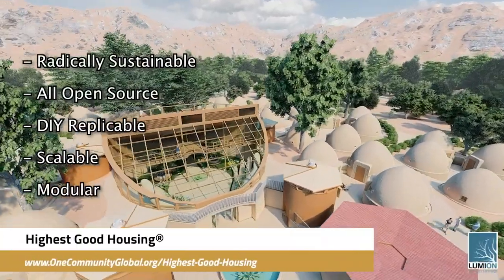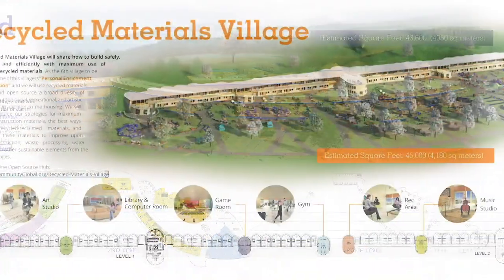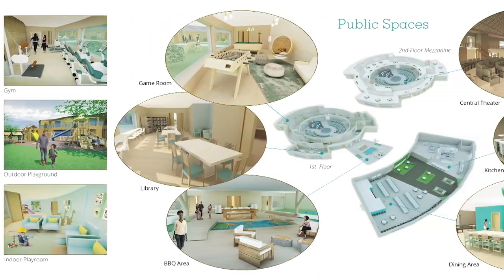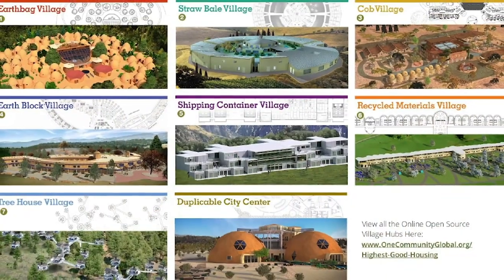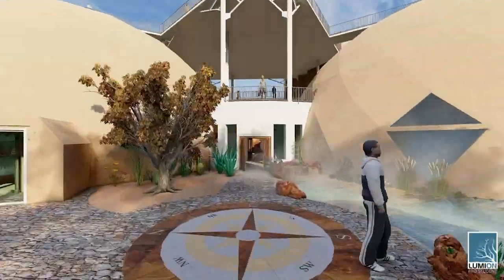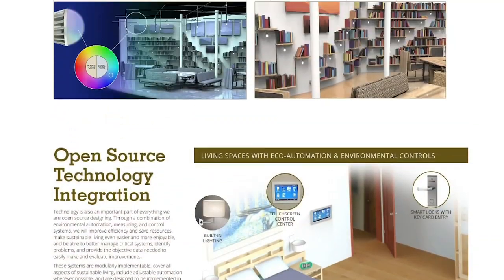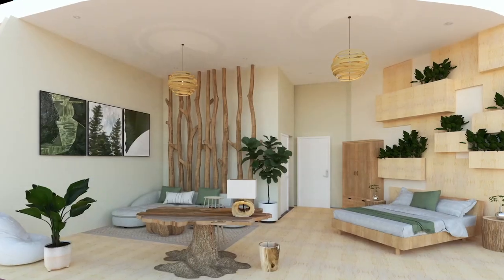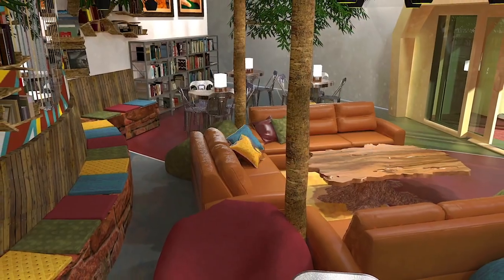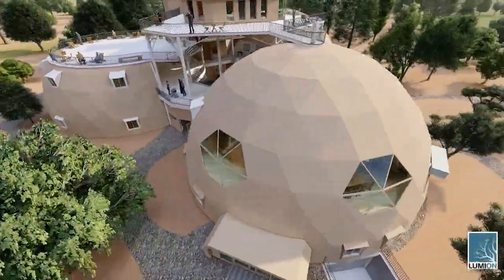The One Community approach to highest good housing is eco-artistic home building that is affordable, sustainable, do-it-yourself duplicable, resource and space efficient, and consists of seven different sustainably constructed village models. One Community is also creating an open-source duplicable city center designed to be LEED Platinum certified, provide 12 guest rooms, dining for over 150 people, and laundry and recreation space for over 300 people, all while saving money, time, space, and resources.